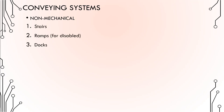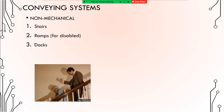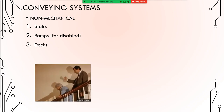There are two types of conveying systems. For non-mechanical: stairs or staircases, and ramps for disabled persons. Ramps are used by people, but when a ramp is used for goods, it is called a dock. Usually in shopping centers, groceries, and loading areas, they have docks.